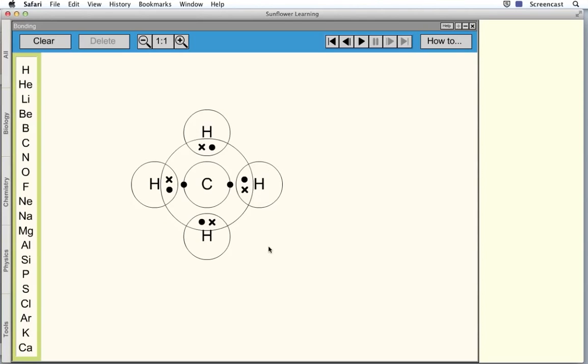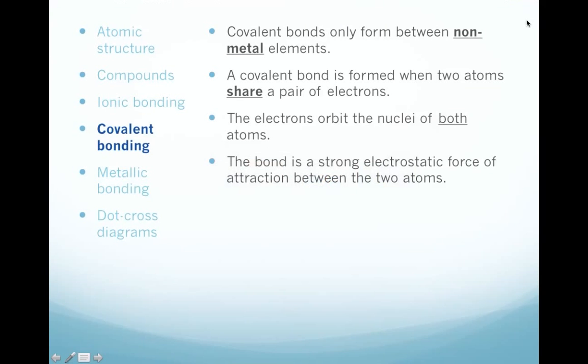So, to summarise, covalent bonds only form between non-metal elements. And a covalent bond is formed when two atoms share a pair of electrons. Each atom donates an electron. These electrons orbit the nuclei of both atoms, and that's the basis of the bond. That's the strong force of electrostatic attraction between the two atoms.